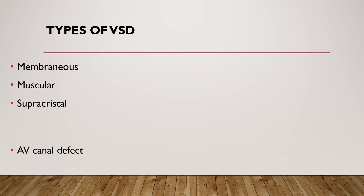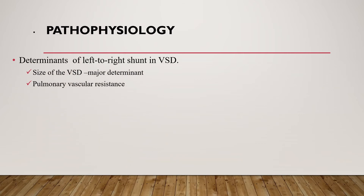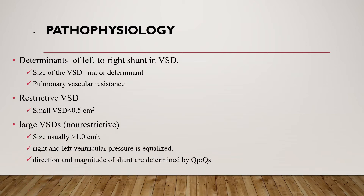The four types of VSD are: membranous, muscular, supracristal, and atrioventricular canal defect. Regarding pathophysiology, the major determinant of the left-to-right shunt in VSD is the size of the VSD, with pulmonary vascular resistance also playing a role. A restrictive VSD has a size less than 0.5 cm², while an unrestrictive or large VSD is greater than 1 cm². In unrestrictive or large VSDs, right and left ventricular pressures are equalized, and the direction and magnitude of the shunt are determined by the ratio of pulmonary to systemic blood flow.